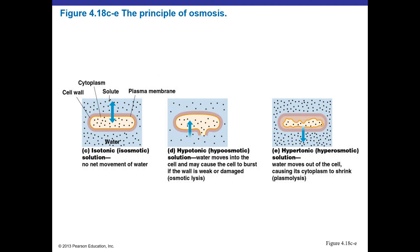If you place a bacterial cell in a hypotonic environment, the amount of solutes inside the cell is higher, meaning there's not a lot of water inside. So the water rushes into the cell. If the cell wall is damaged — by an antibiotic or lysozyme — the pressure is going to burst the cell open. This is referred to as osmotic lysis, and preventing it is one of the functions of the cell wall.